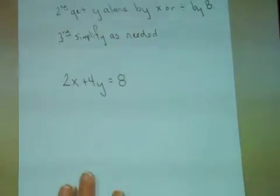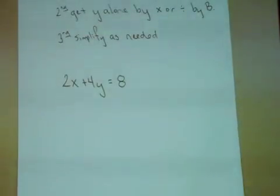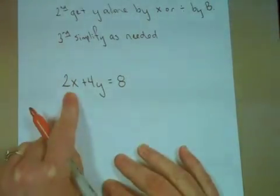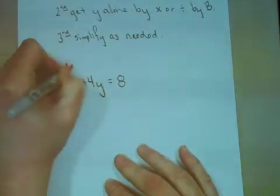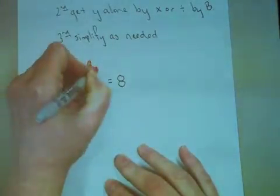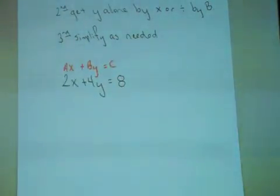So let's start with this example, 2x plus 4y equals 8. According to my first step, I need to move the ax term. In this case, this is the ax term, because this is in ax plus by equals c form.